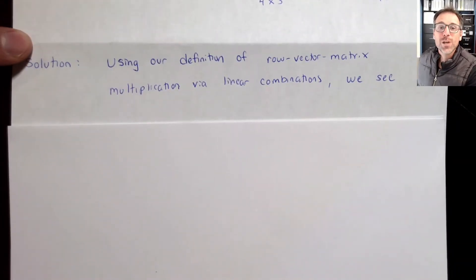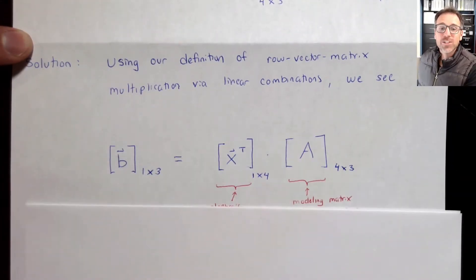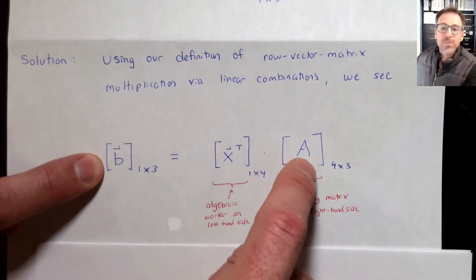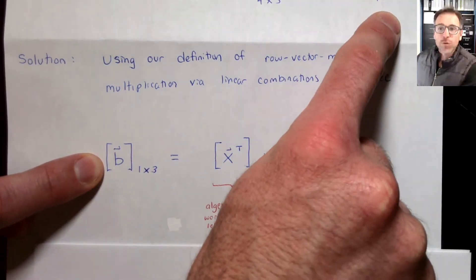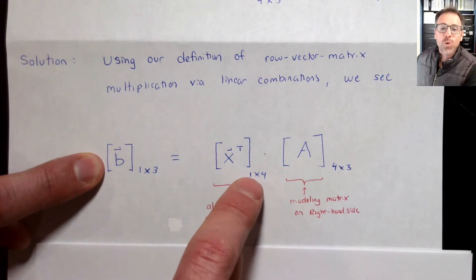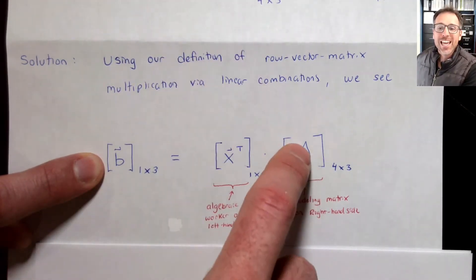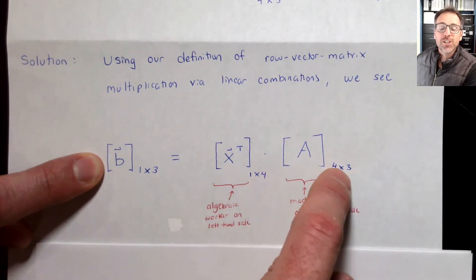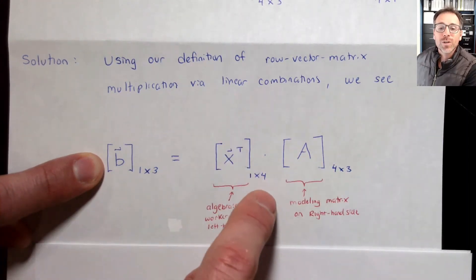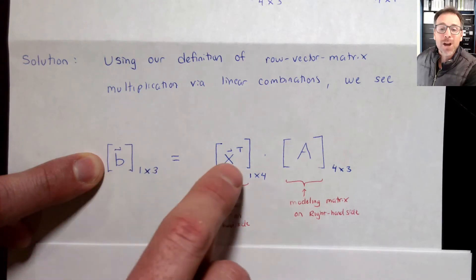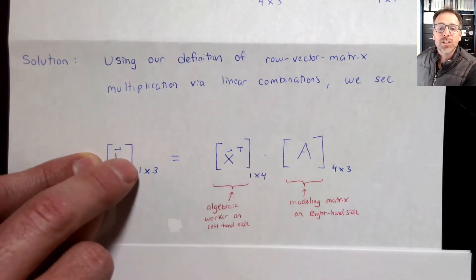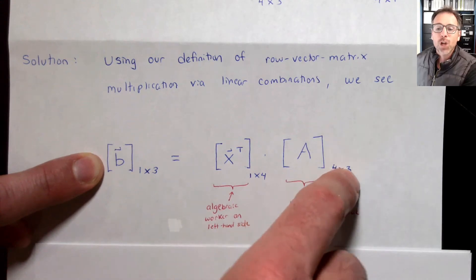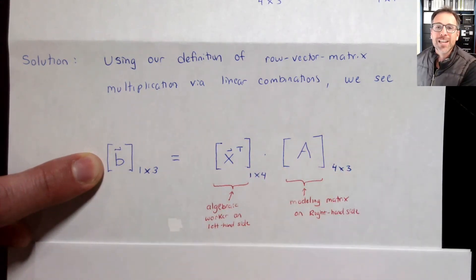First, let's recall our definition and do some analysis before we start. Notice b is going to be x-transpose times A. x was 4 by 1, which means x-transpose is 1 by 4. A was 4 by 3. The inner dimensions must agree, and they do match up — they cancel out — and the dimensions of the product are defined by the outer dimensions: 1 row and 3 columns.